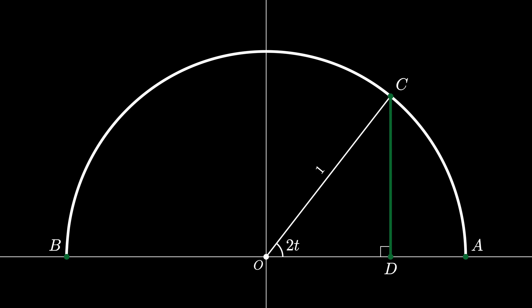In the right triangle ODC, the leg opposite to the angle 2t has a length of sine of 2t, and the leg adjacent to the angle of 2t has a length of cosine 2t.